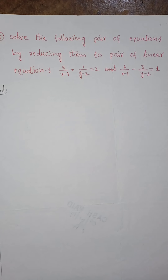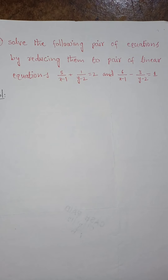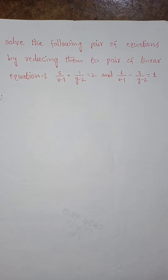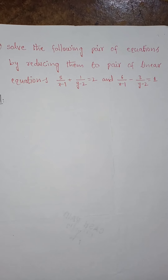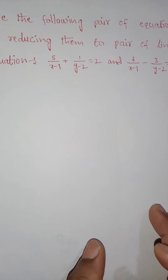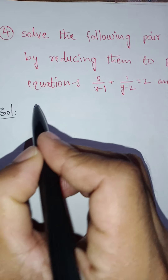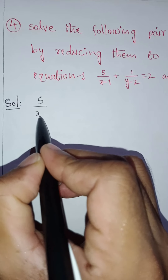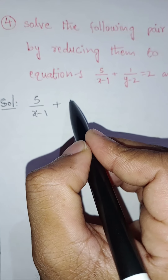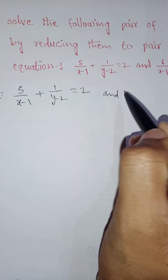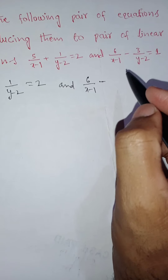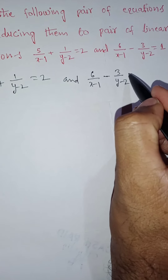Solve the following pair of equations by reducing them to a pair of linear equations: 5 by (x minus 1) plus 1 by (y minus 2) equal to 2, and 6 by (x minus 1) minus 3 by (y minus 2) equal to 1.